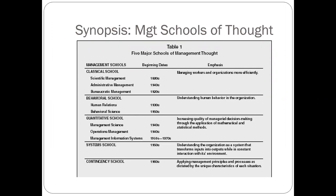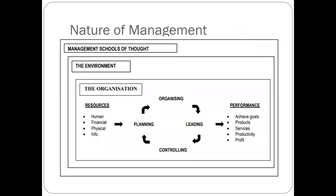The quantitative school of thought uses operations and information systems. They believe in using mathematics to succeed — for example, calculating economic order quantity for inventory, using Total Quality Management, or applying the Six Sigma rule for operations. Contingency theory holds that managers should change their style to match the environment — being strict when needed, or building relationships when needed.